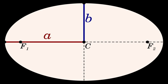The endpoints (0, ±b) of the minor axis lie at the height of the asymptotes over/under the hyperbola's vertices.